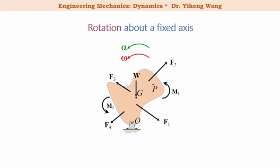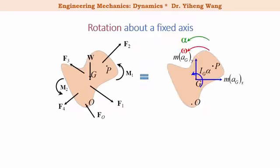Based on the equations of motion for general plane motion, now let's derive the equations of motion for the special case of rotation about a fixed axis. In this case, the object is pinned at point O, and therefore it is only allowed to rotate about an axis that is perpendicular to this plane and passes through point O. Again, let's start with drawing the free body diagram and the kinetic diagram of this object.